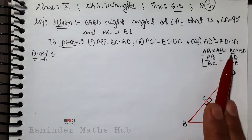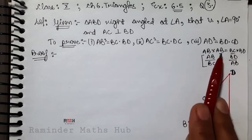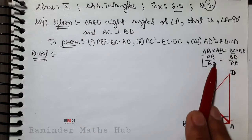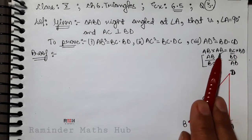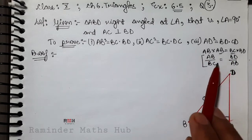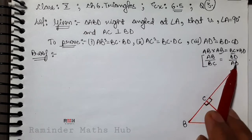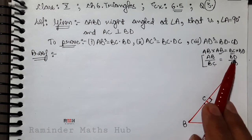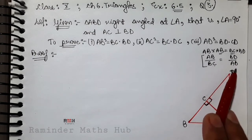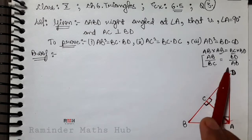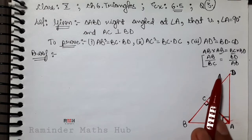इसको थोड़ा सा rearrange करें - BC को इस side लाएं और AB को उस side shift करें। यहाँ से hint मिला कि इन sides की ratio equal है। Ratio equal तब आती है जब हम उन triangles को - numerator में जो sides हैं उनसे बनने वाली triangle और denominator में sides हैं उनसे बनने वाली triangle को similar prove कर दें।